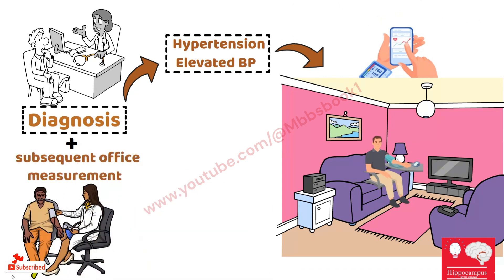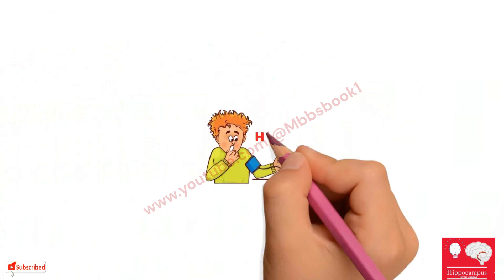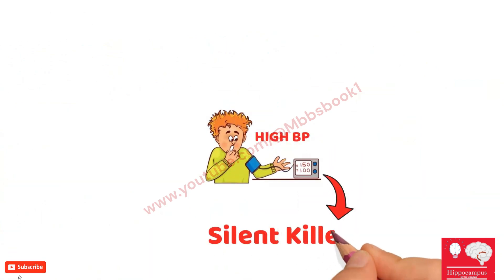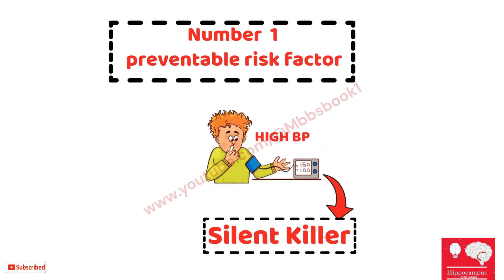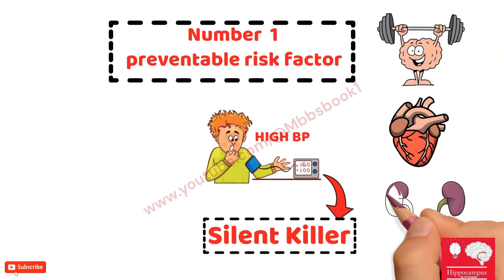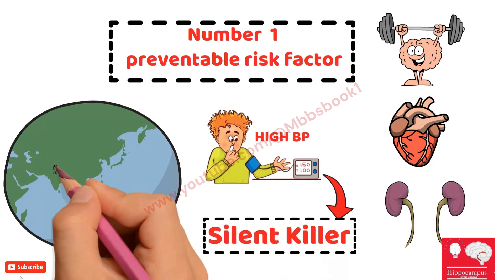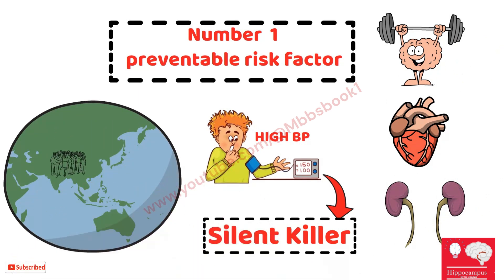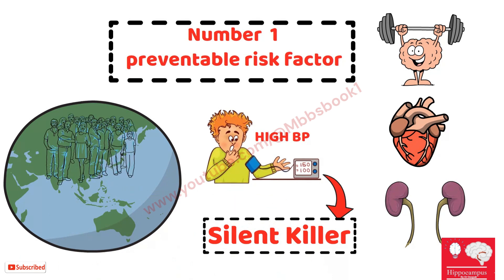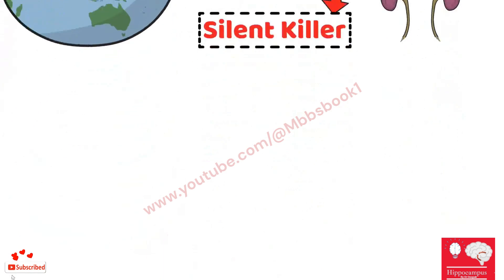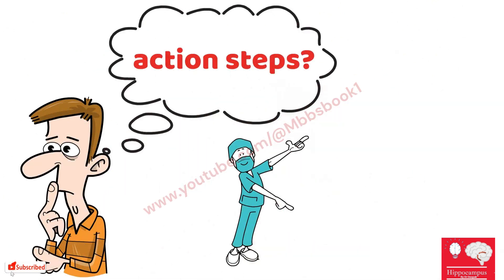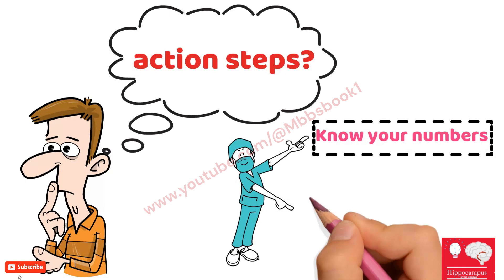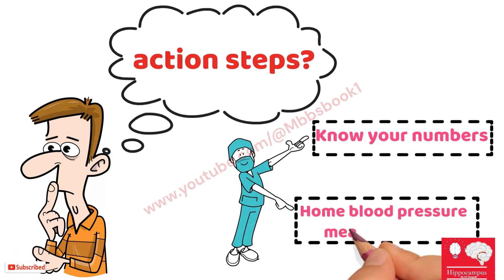For a long time we have called high blood pressure the silent killer, and for a very good reason. It's the number one preventable risk factor for heart disease, stroke, and kidney disease across the globe. The scary part is many people are walking around with dangerously high blood pressure and have no idea. So what are your action steps? First, know your numbers — regular blood pressure monitoring at home is strongly encouraged.